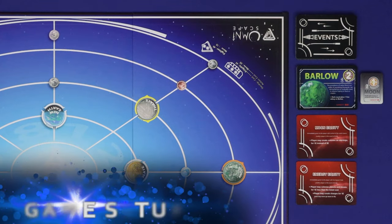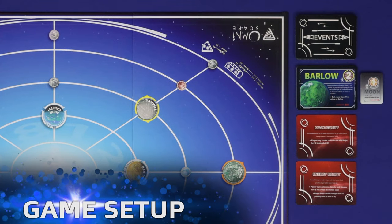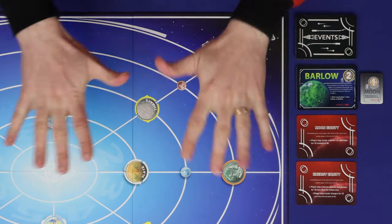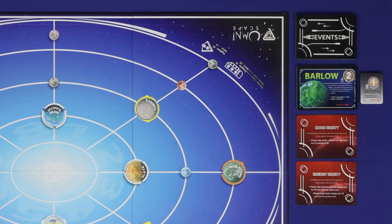We'll take you through the setup and rules first for a 3 and 4 player game. There are a few variations at 2 players which we'll cover at the end of the video. To set up, place the board in the center of the table, and nearby place the events in a shuffled face-down stack, and then the planets, moons, moon equity, and energy equity face up.